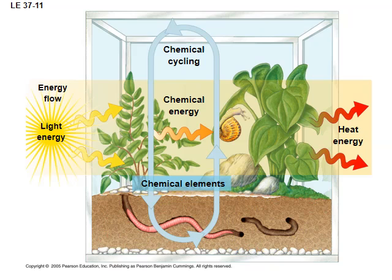Here you have energy flow. Energy comes in and ultimately you lose it through heat loss. But the chemicals — whether it's carbon, nitrogen, or phosphorus — just move around.